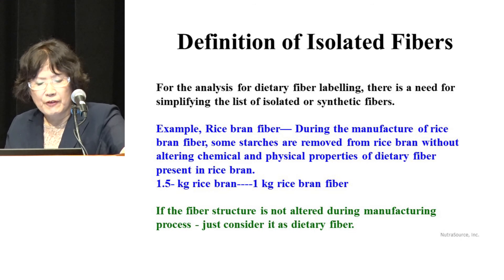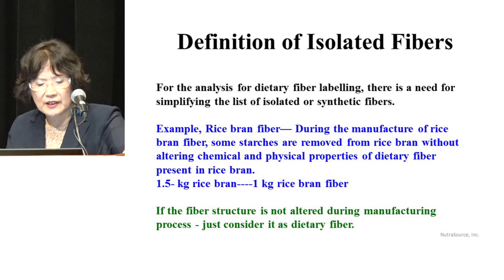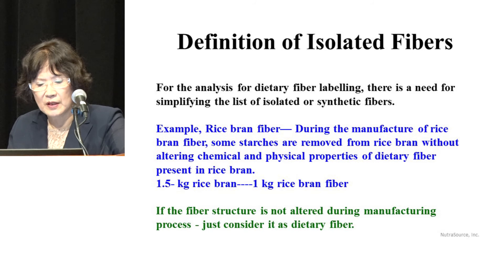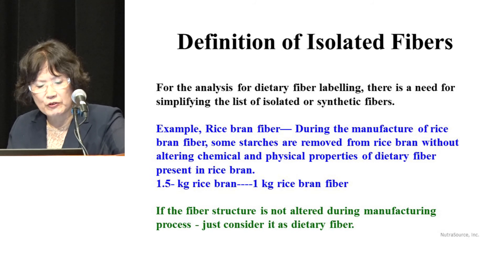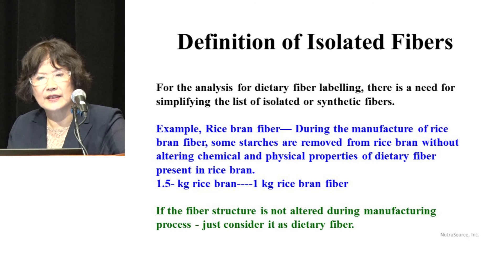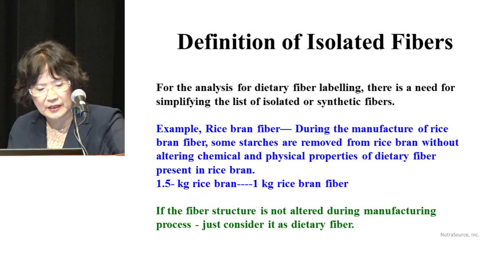I want to use rice bran fiber as an example. During manufacture of rice bran fiber, some starches are removed from rice bran without altering the chemical and physiological properties of dietary fiber present in the rice bran. To make one kilogram of rice bran fiber, it needs 1.5 to 2 kilograms of rice bran. Can we really say this is an isolated fiber?